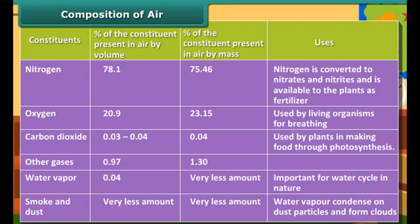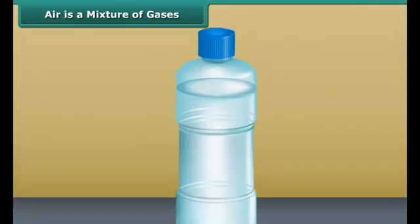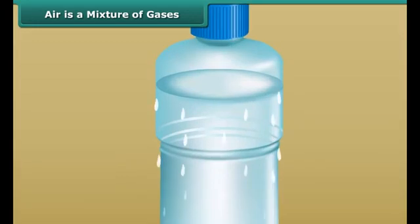What is air made up of? Air contains nitrogen, oxygen, carbon dioxide, and other rare gases. You can see from this table that nitrogen has the largest share, then oxygen, then some rare gases, and finally carbon dioxide has the least. Water vapor, smoke, and dust are present in very small amounts. Air is a mixture of different gases.